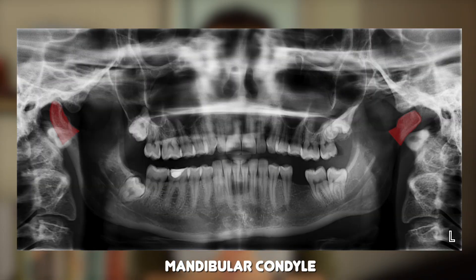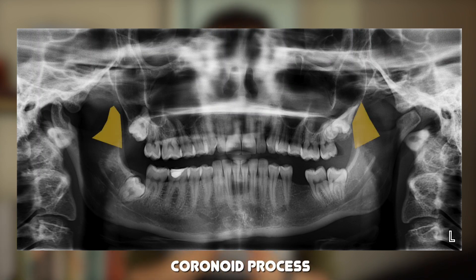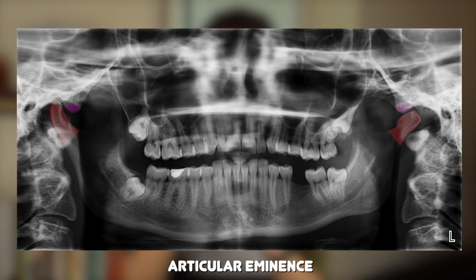Here we can see the mandibular condyle, seen as a rounded radio-opaque area located within the glenoid fossa towards the lateral aspects of the panoramic film. The glenoid fossa is that concave area in the zygomatic process of the temporal bone and it forms part of the temporomandibular joint. The coronoid process can be seen more medial to the condyle as a radio-opaque triangular area, typically overlying the maxillary tuberosity and possibly some of the sinus. Just in front of the condyle and glenoid fossa you can see the articular eminence, which is also a key component of the temporomandibular joint.